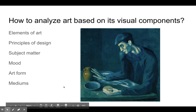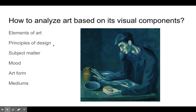When we're analyzing art, we want to make sure we pay attention to the visual components: the elements of art being used, the principles of design, what the subject matter is, and maybe if there's a certain mood. We also want to consider what the art form actually is — if it's a painting or a drawing, that's going to affect the way we look at it, or the mediums being used. You can see this image here — just by the colors and the way they're using the elements of art, you already get a mood from it, because the blue and dark colors make it seem kind of sad.